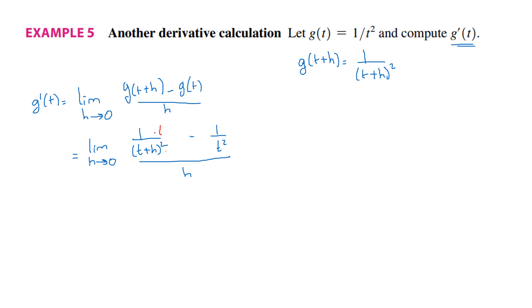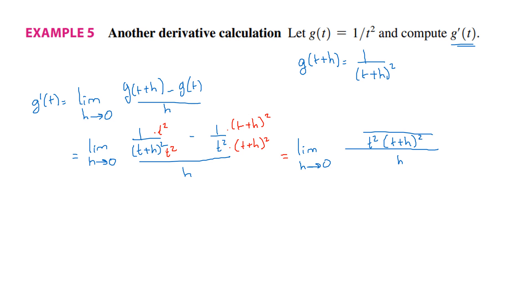The first fraction is missing t squared, and the second fraction is missing t plus h squared — multiply up and down for each. We can write the equation in a simpler way: the limit as h goes to 0 of a whole fraction over h, where the numerator has common denominator t squared times t plus h squared. Working on the numerator: we have t squared minus the expansion of t plus h squared, which is t squared plus 2th plus h squared. Switching signs because of the minus: minus t squared minus 2th minus h squared. Then t squared and minus t squared cancel. Multiply the h with t squared times t plus h squared.